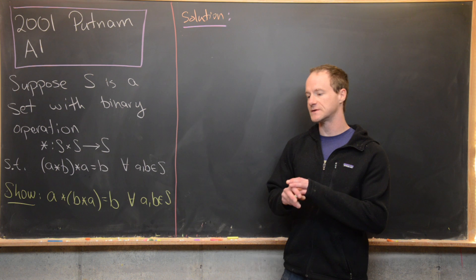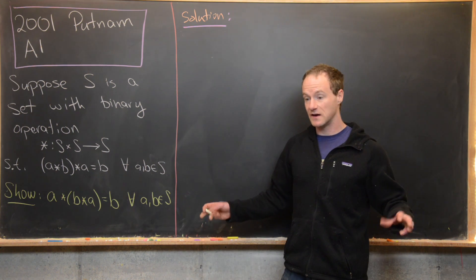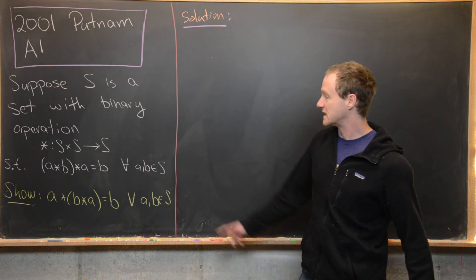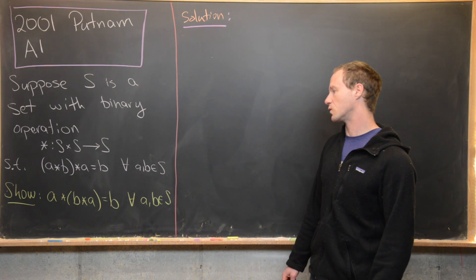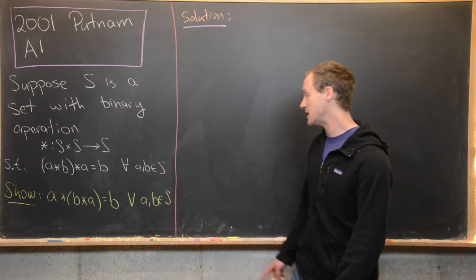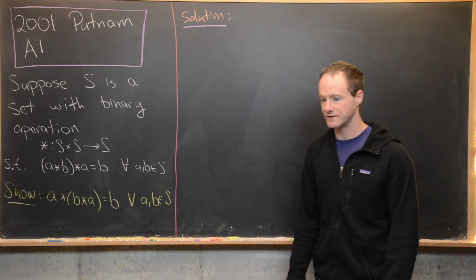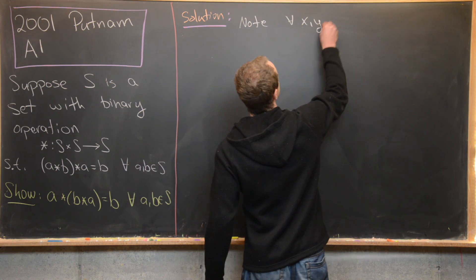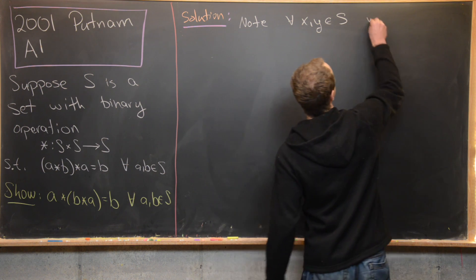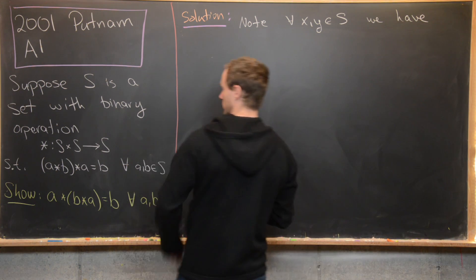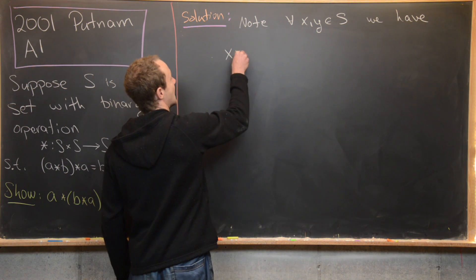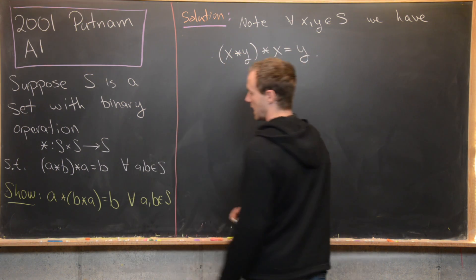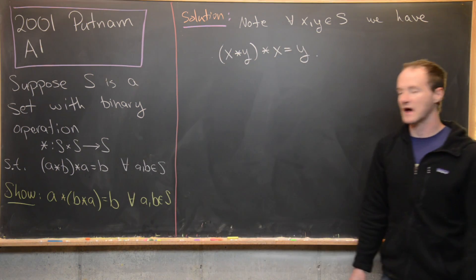So let's see how this goes — the solution is going to be very, very quick. I'm going to take the given equation and rewrite it with X and Y instead of A and B, since our goal equation involves A and B. So for all X and Y in S, we have: (X★Y)★X = Y.